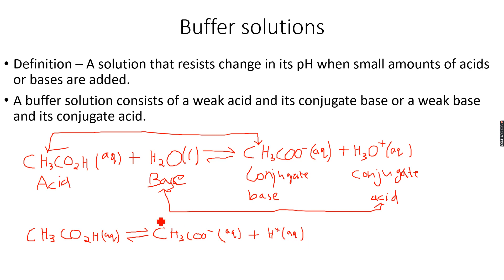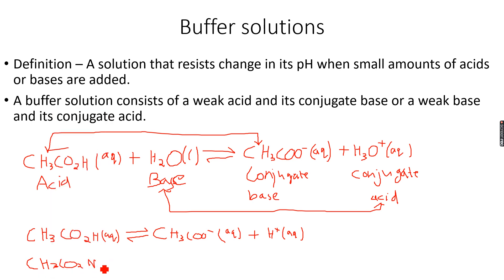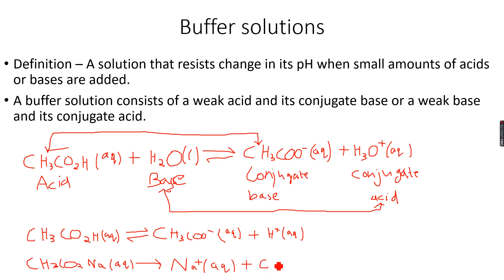A buffer solution consists of a weak acid and its conjugate base. The conjugate base here is CH3COO-. We then choose a salt of its conjugate base — sodium ethanoate — which is essentially ethanoic acid where the H+ ion is replaced by Na+. Sodium ethanoate will completely dissociate because it is a salt, not an acid.